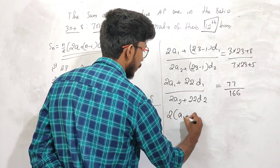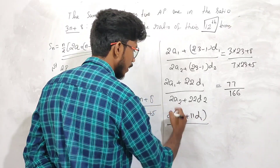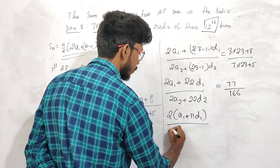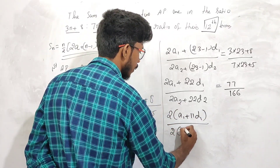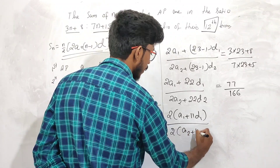This gives us a1 plus 11d1 in the numerator and a2 plus 11d2 in the denominator, which is exactly the formula for the 12th terms of the two APs.